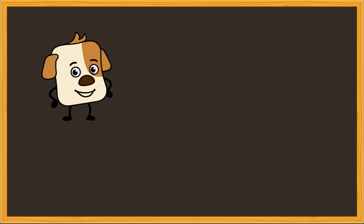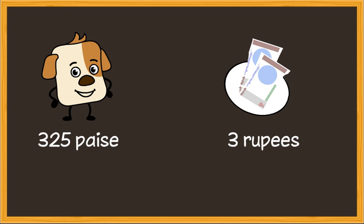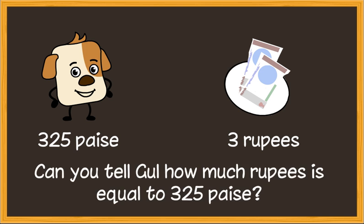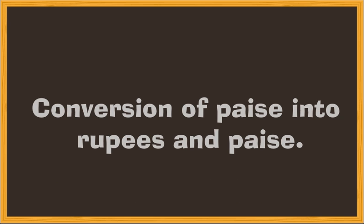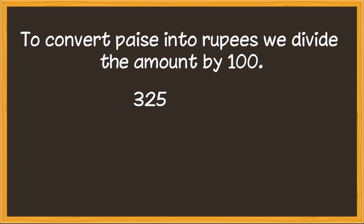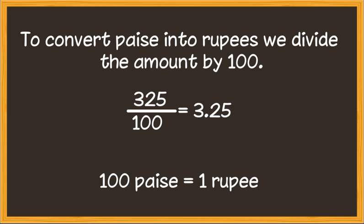Gul has a total of 325 paise and the ticket is for three rupees. Can you tell Gul how many rupees is equal to 325 paise? Let's learn conversion of paise into rupees. To convert paise into rupees, we divide the amount by 100. We know that 100 paise is equal to 1 rupee.